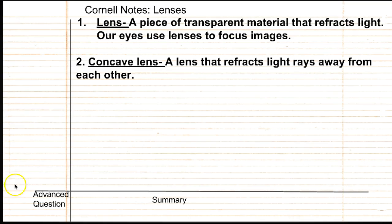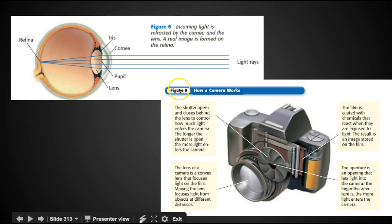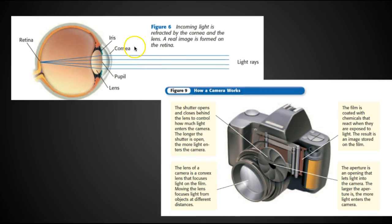Ready? A convex lens. A convex lens is a lens that refracts light rays toward each other. Your eye is a convex lens, and a camera uses a convex lens too. So you can see that the eye focuses the image into one spot in the back of your eye, called a retina.